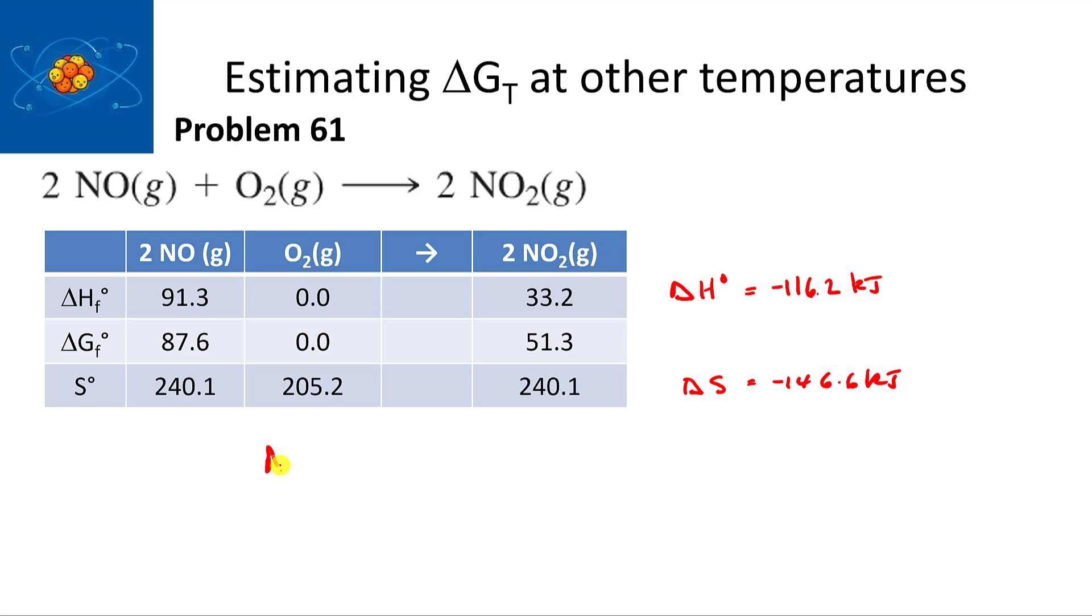Delta G is equal to delta H minus T delta S. So it's minus 116.2 kilojoules minus 298 kelvin times minus 146.6 joules per kelvin. This is kilojoules and this is joules, so I'll write 1,000 joules per kilojoule to get them on the same unit. When you do the calculation, that comes out to minus 72.5 kilojoules.